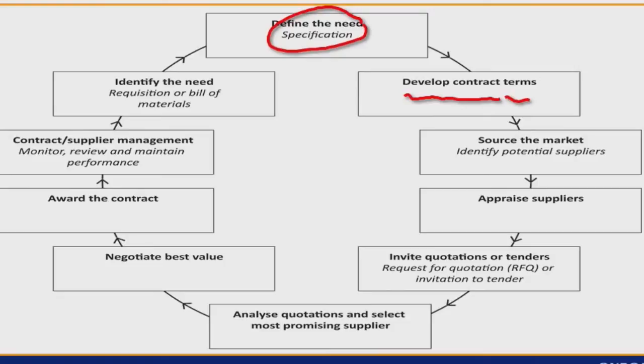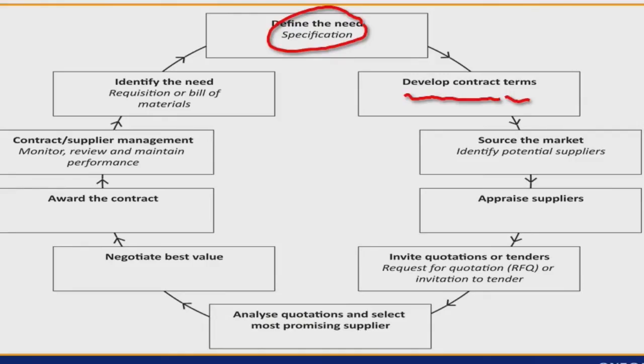Then we negotiate for the best value — not necessarily the best price, but the best value. We then award the contract. When the contract is being performed and the supplier is supplying goods or services, we monitor how they are performing, which means we've set up parameters to monitor them by. We then assess whether we need to change or develop it, and go back into the cycle again for another product or for another period of supply.